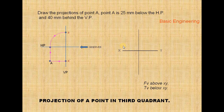On this line you have to indicate the projection of point A — projection means front view and top view. The front view is below the XY line at a distance of 35 mm. From XY to A-dash is 35 mm — first you indicate the 35 mm like this, next you indicate the A-dash.